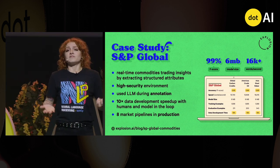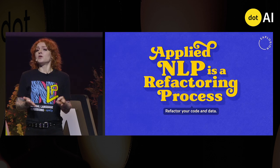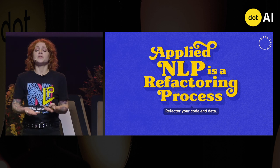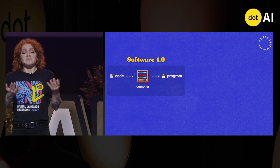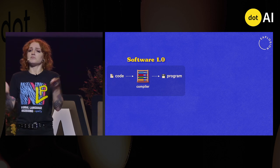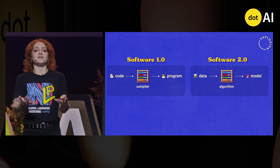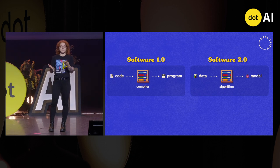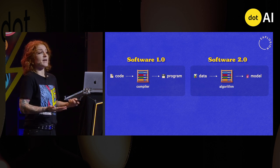Now you might ask yourself, what's their secret? In one word: refactoring. You might be familiar with refactoring from refactoring code — you probably do that all the time as a developer. But the same also applies to your data. In traditional software development, you have code that goes through a compiler and at the end you get a program. In software 2.0 or machine learning, you have data — that data goes through an algorithm and at the end you get a model. And if you want to check if your changes are having an impact and how your system is performing, you usually have tests, or in the case of machine learning, you have an evaluation.